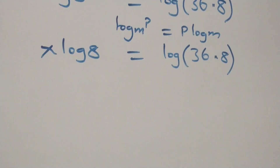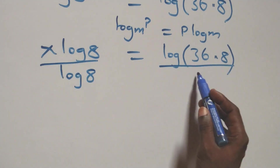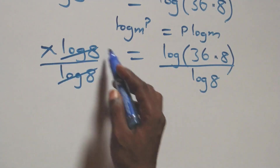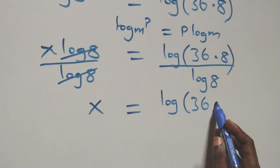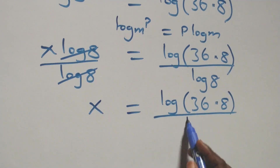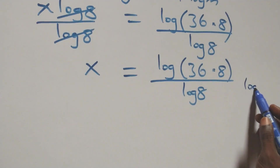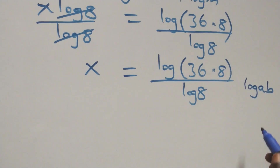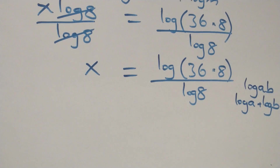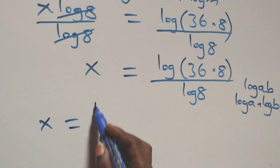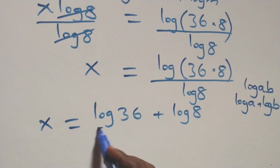We divide both sides by log 8. The log 8 terms cancel, leaving x equal to log(36 times 8) divided by log 8. Applying the logarithm product rule, log(A times B) equals log A plus log B, this becomes x equals log 36 plus log 8, all over log 8.